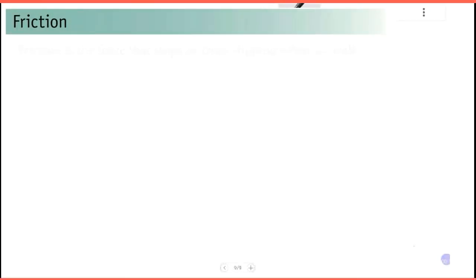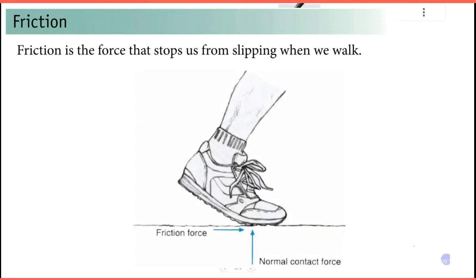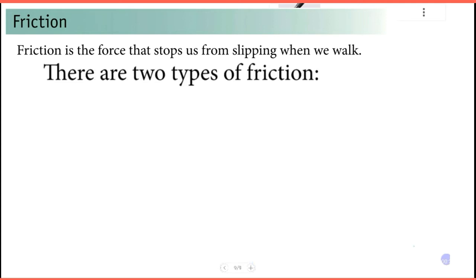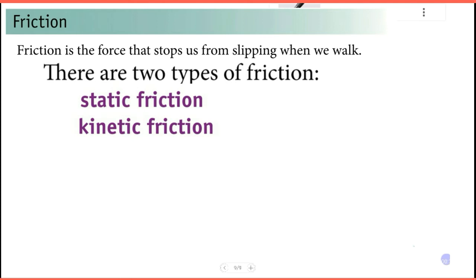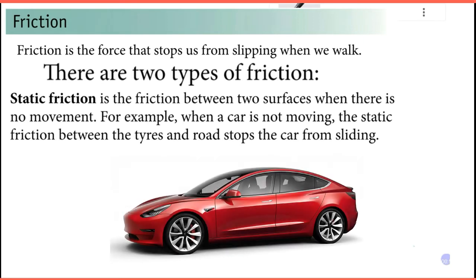Now we have friction. Friction is the force that stops us from slipping or walking. Static friction is the friction between two surfaces when there is no movement, like when an object is at rest.